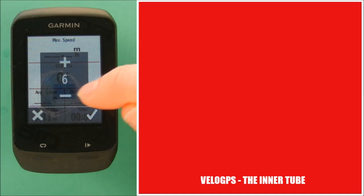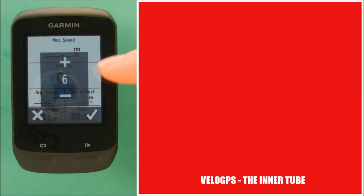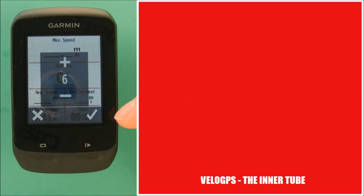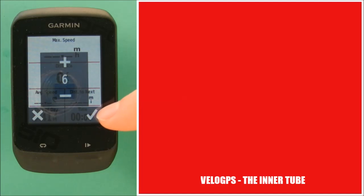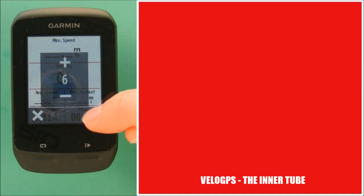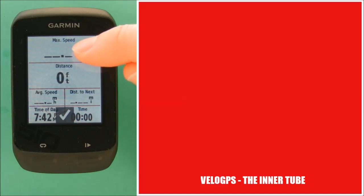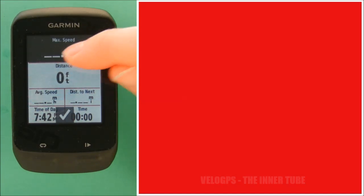So if we reduce it back down to six, you'll notice that you get two slightly larger data fields at the top and then four smaller data fields down the bottom. Once you're happy with the number of data fields you're going to display, you select the tick option, and then to adjust the data fields you literally just touch on the field.